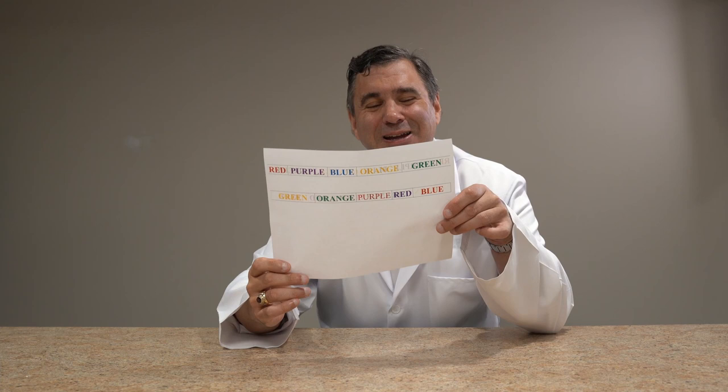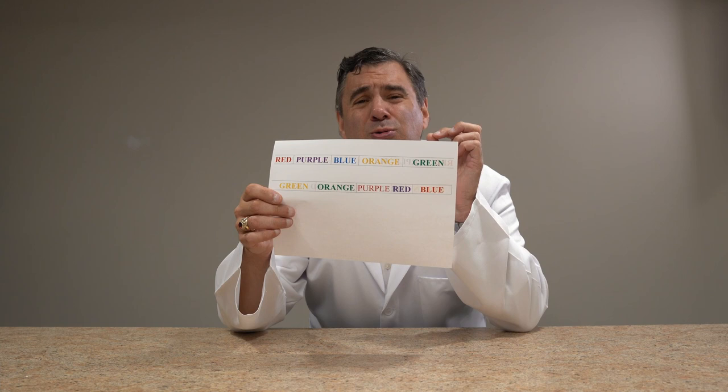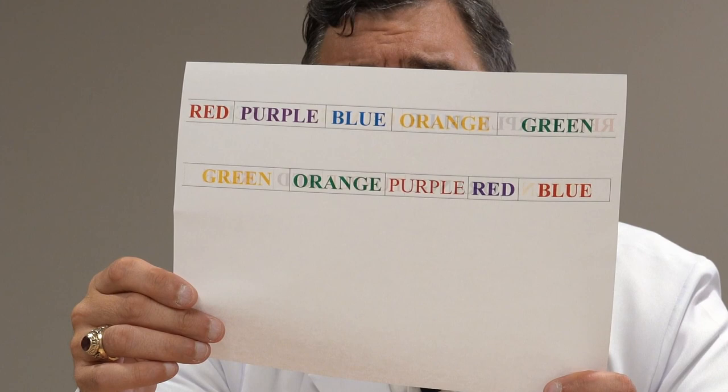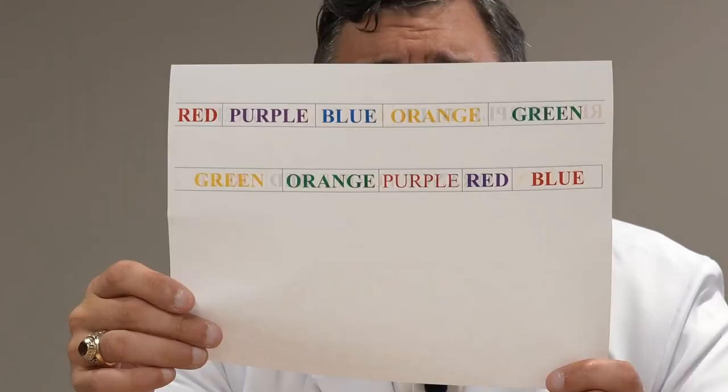So now what I want you to do is I want you to not read the words. I want you to look at the words on the top and say the words based on the color it is. The top one, again, with the word red — so what color is that? Red, purple, blue, orange, green. Do it again. What color is it? Red, purple, blue, orange, green.